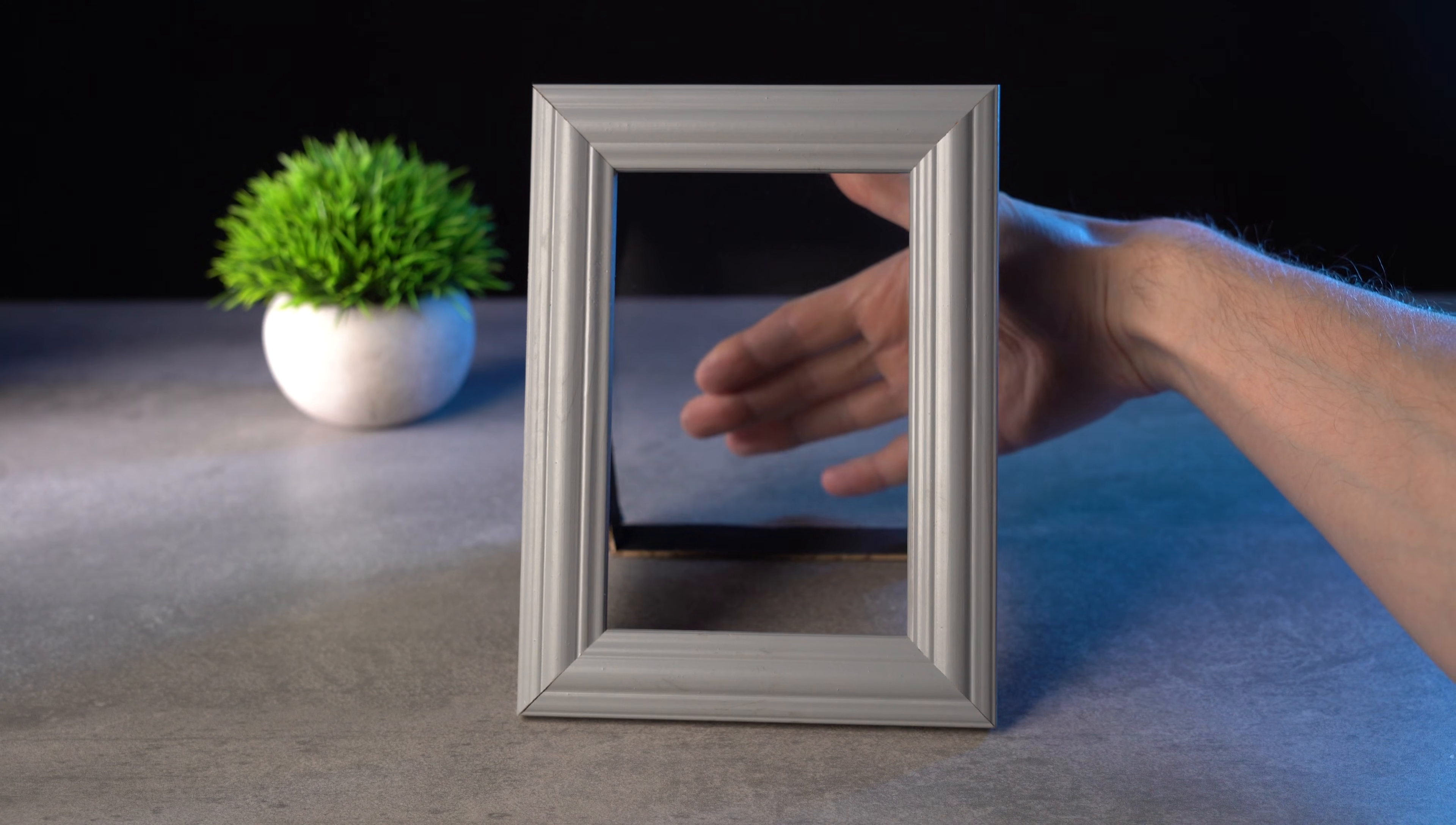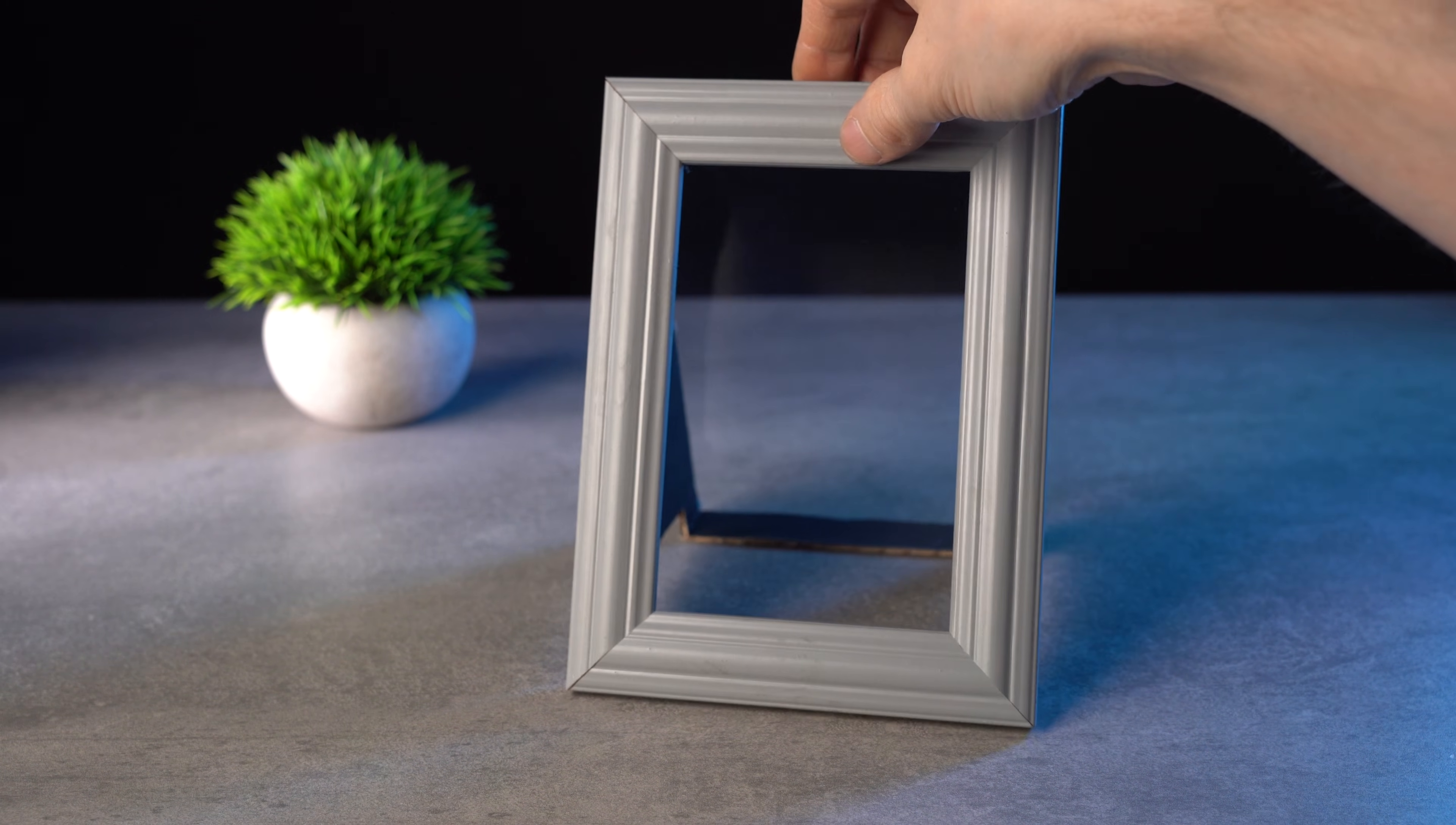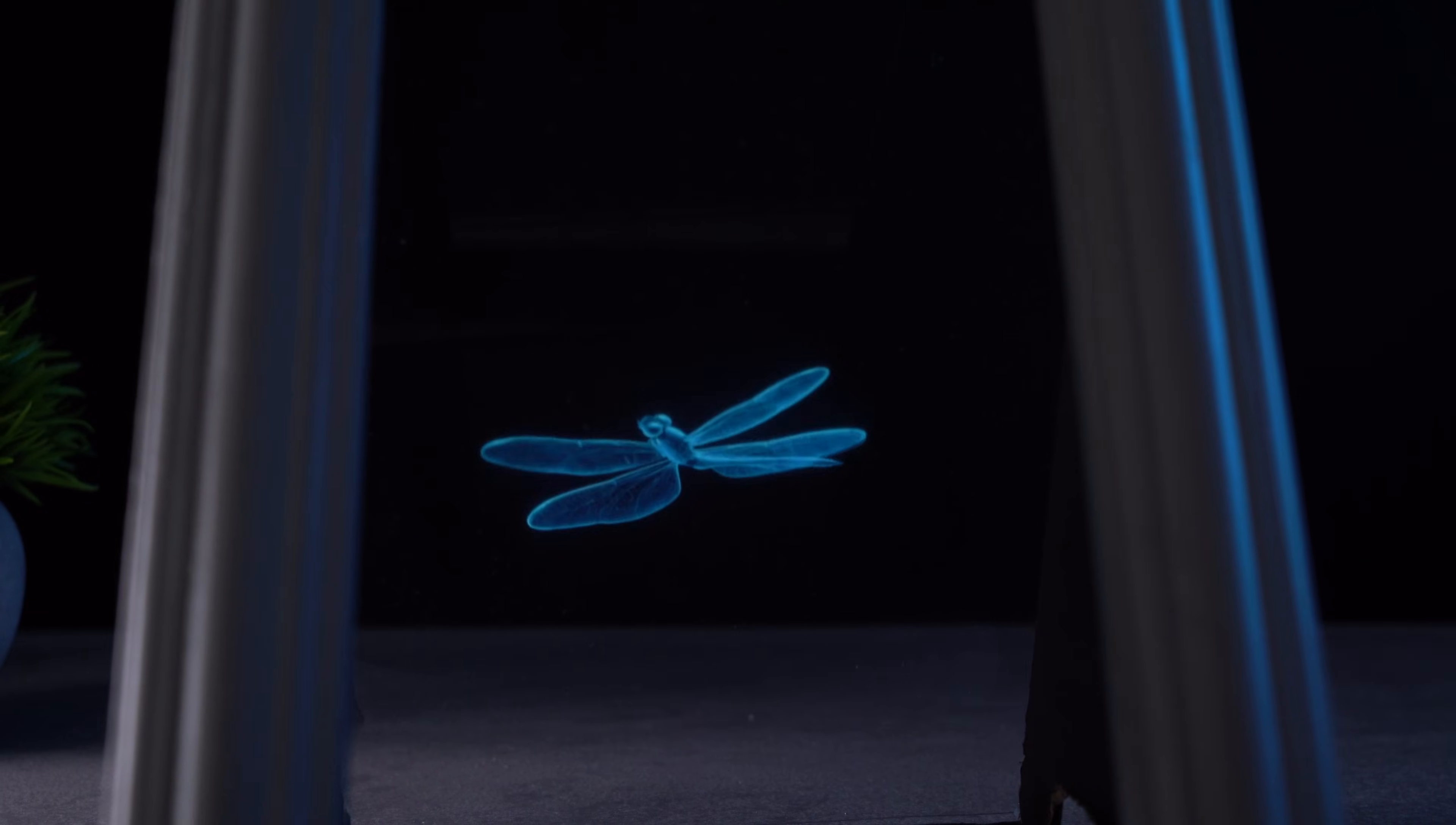You can also try another version: build the setup without the back cardboard using only the clear plastic. In that case, dim the lights a bit so the hologram looks brighter. Look at this. From a low angle, it looks especially interesting when the phone is completely hidden by the frame. Almost like a real hologram.